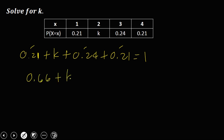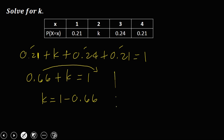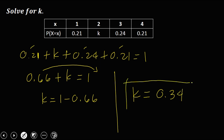Then K plus 0.66 equals 1. To solve for K, transpose 0.66 to the right so it becomes negative: K equals 1 minus 0.66. Therefore K is equal to 0.34. This is now the value of K.